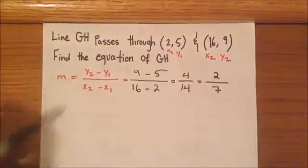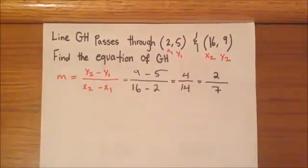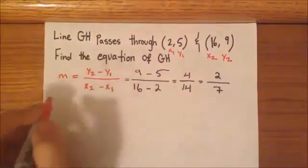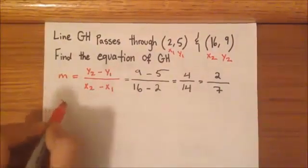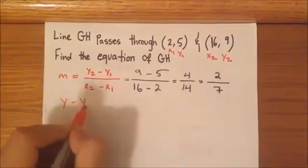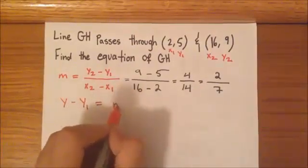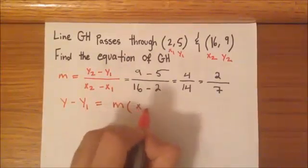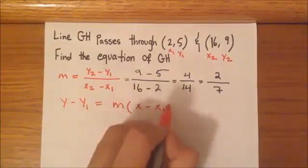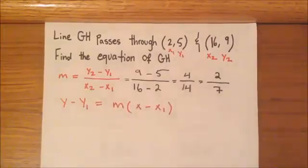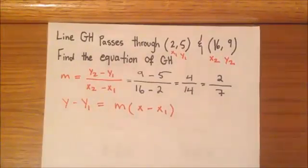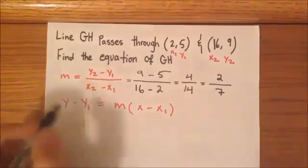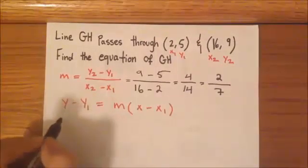Slope is represented by m. Now we have to use the point slope formula to get our equation. So, the point slope formula says y minus y1 equals m times, m is our slope, x minus x1. Alright, so now we have to plug in our points again to this formula and then I believe we can get our answer.